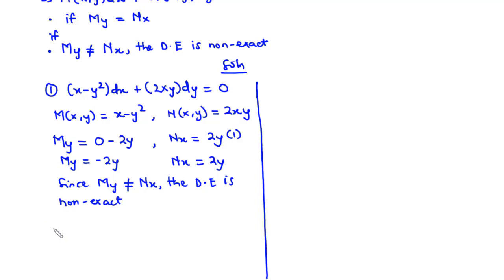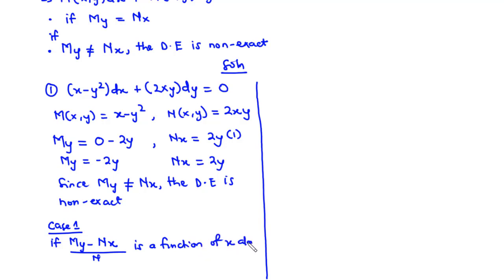We consider two cases. Case 1: if (My − Nx) / N is a function of x alone, then the integrating factor μ(x) equals e to the power of the integral of that function with respect to x, i.e., μ(x) = e^(∫c(x)dx).